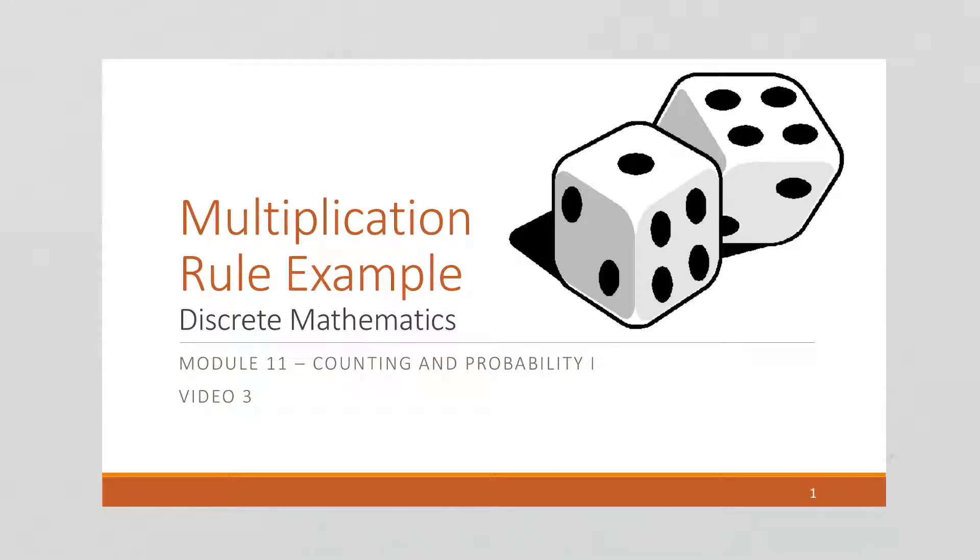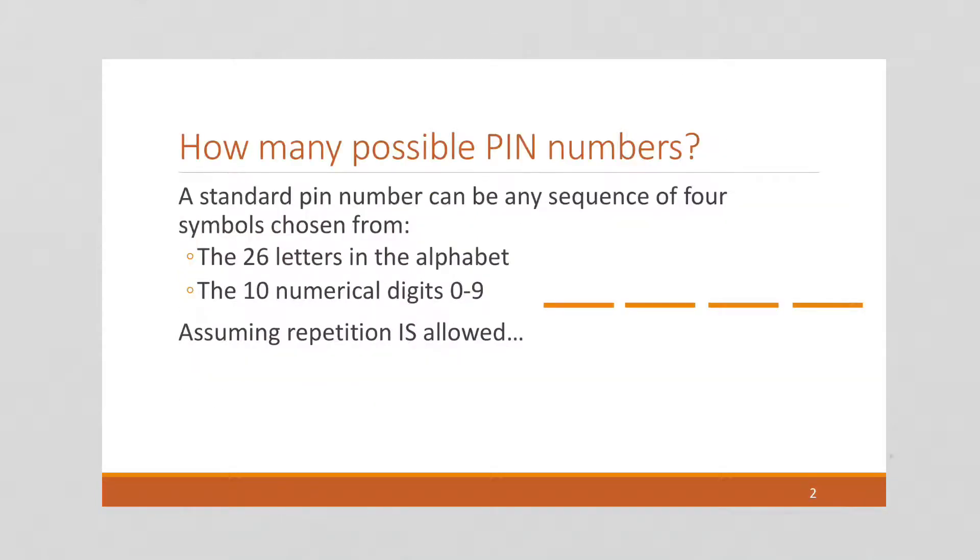In this video, we're going to do an example that uses the multiplication rule in combinatorics. So let's think about pin numbers. Every time you open a new account, they make you remember a new pin number. This is an example where we're going to allow, often pin numbers are just numbers, but we're going to allow letters too.